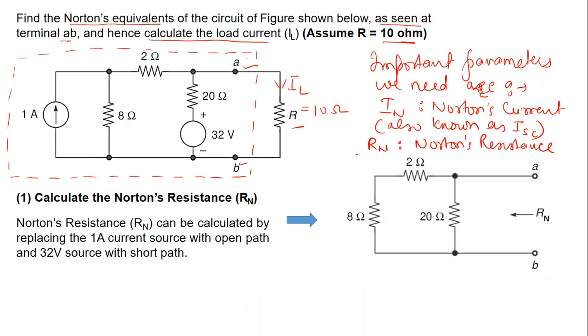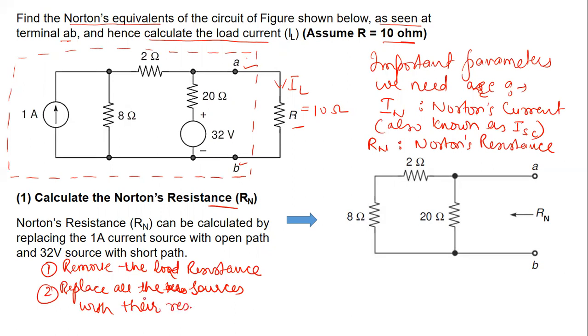So first of all, we will calculate the value of Norton's resistance. Norton's resistance is calculated in the similar manner as we calculate the Thevenin's resistance. So the procedure is same. The first step is remove the load resistance. And the second is replace all the sources with their resistances.